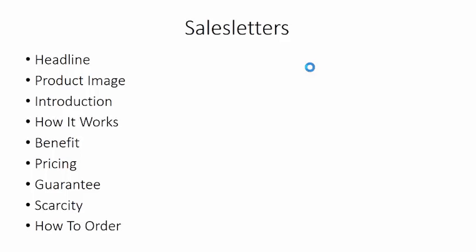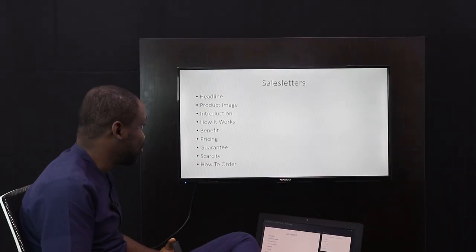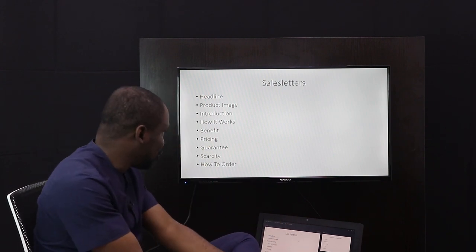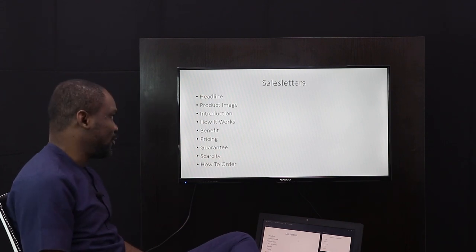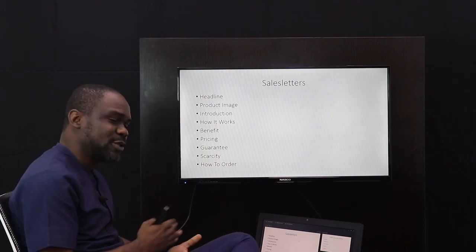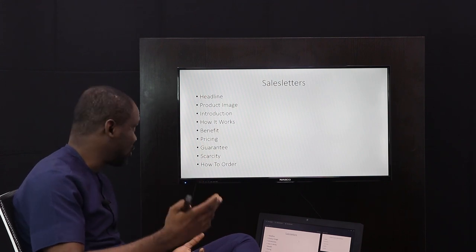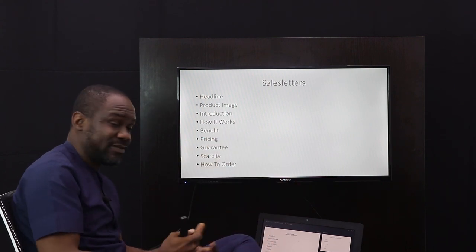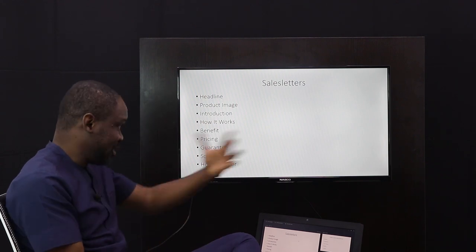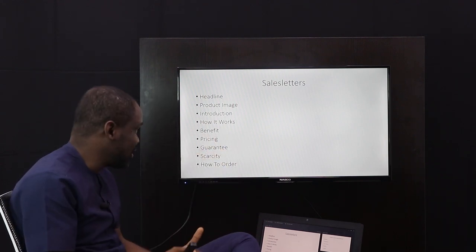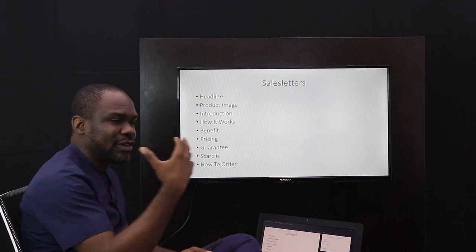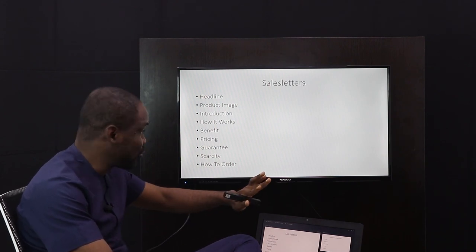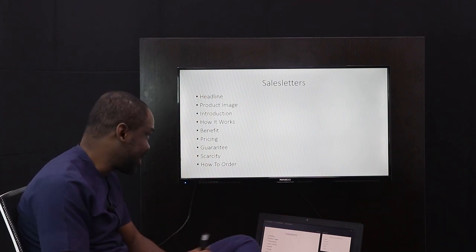After the product image, you introduce the product, explain how the product works, then talk about the benefits. After the benefits, you state the pricing — this is how much you're asking them to pay. After that, put the guarantee. Always put a guarantee for the products you sell. Guarantees will help you sell three, four, five, even ten times more products than if you don't have one — it works like gangbusters. Say: 'Buy the product; if it doesn't add three to five inches to your height just like I say it will, return it and I will give you 100% of your money back, no questions asked.' You are assuming all of the risk.